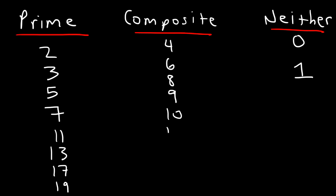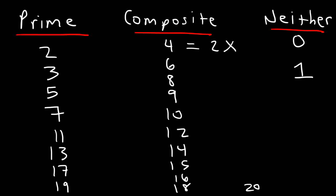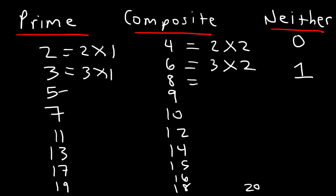Composite numbers include 4, 6, 8, 9, 10, 12, 14, 15, 16, 18, and 20. Each of the composite numbers can be written as a product of factors that doesn't include 1. So 4 can be written as 2 times 2 — that's the prime factorization of 4. Six can be written as 3 times 2. You can break composite numbers down into smaller numbers that don't include 1.